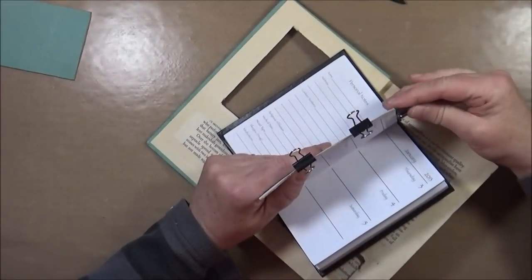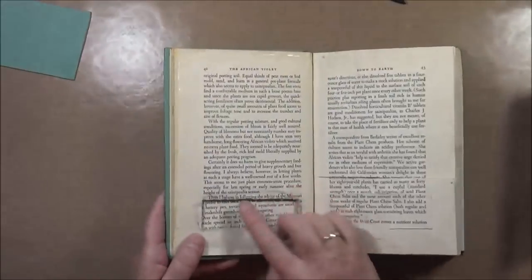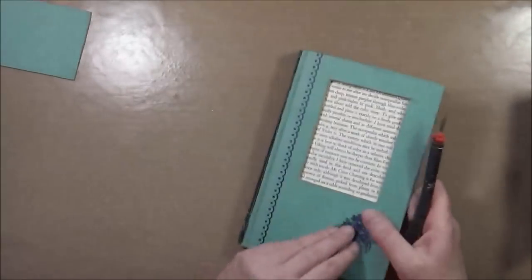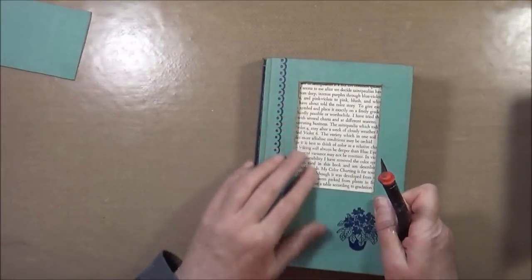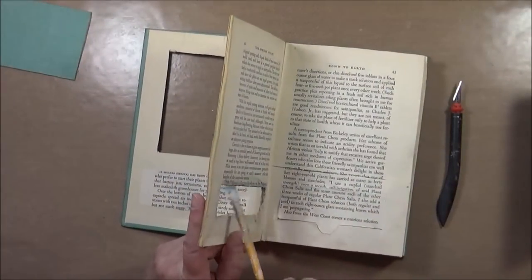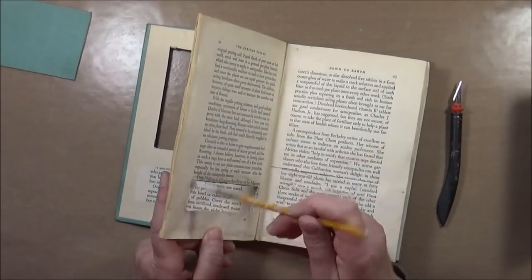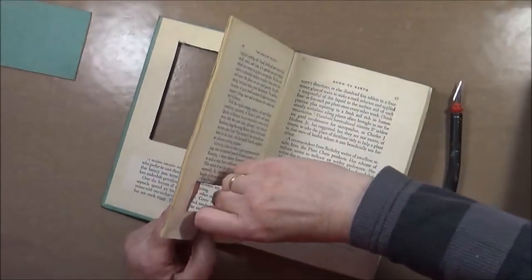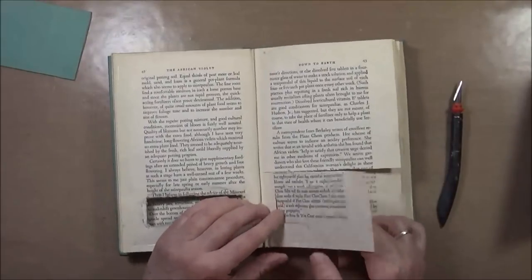You might have to repeat the step a couple of times, but it's a lot easier than gluing one page at a time. Then I cut out another area, similarly as I did in the front, and I added a little bit of glue to the edges just to make the paper glue together right there. And you can clamp that as well.